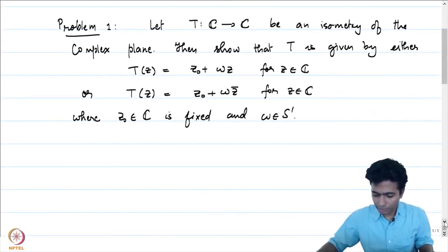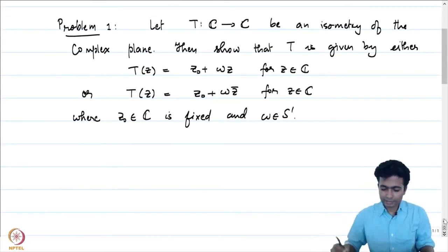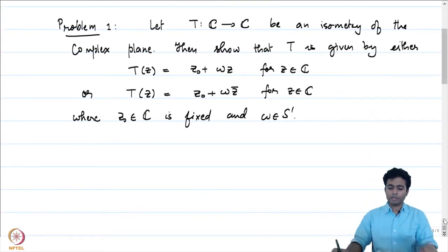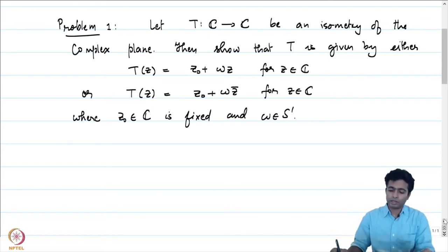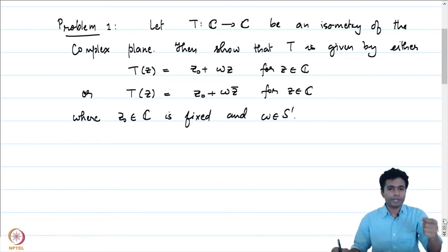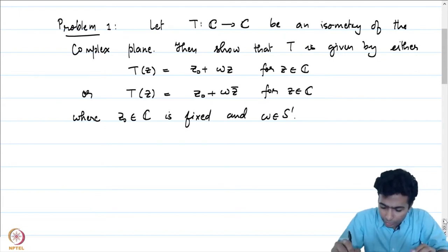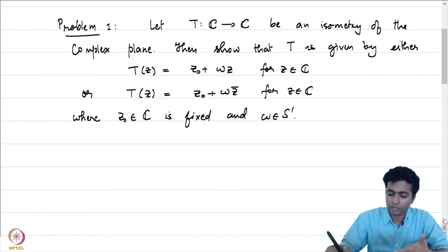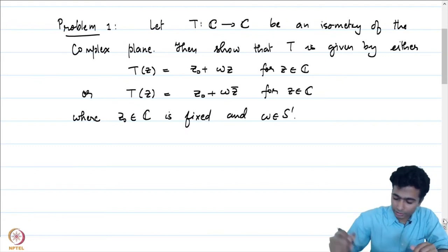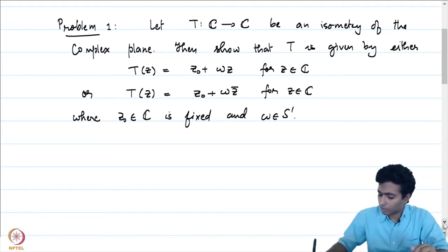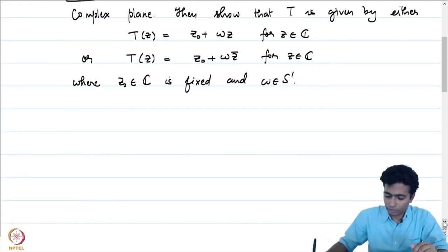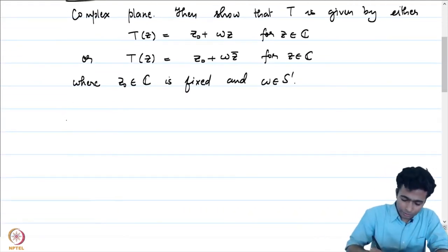As you should guess, the fixed point z₀ can be found by evaluating T at the point 0. You look at T(0) — that is precisely the point z₀ in both cases. That is precisely what we will use.